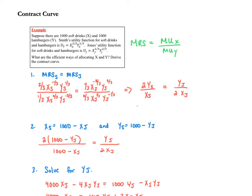Now, where there is Y for Smith, I'm going to substitute that Y Smith is 1,000 minus Y Jones. And where there's X for Smith, I'm going to substitute that X Smith is 1,000 minus X Jones.